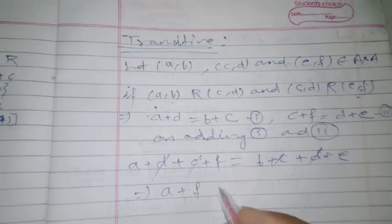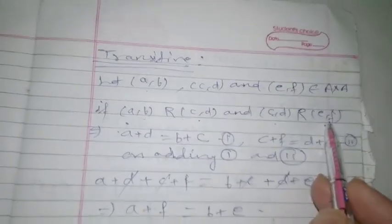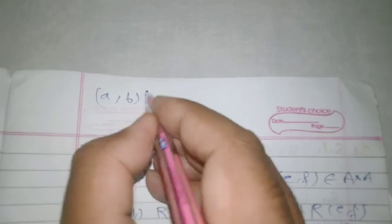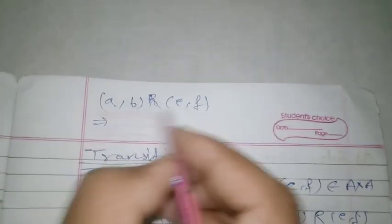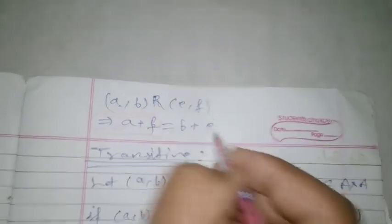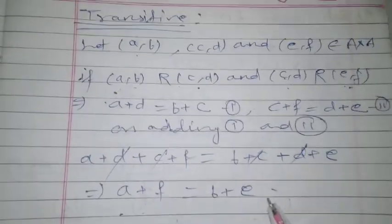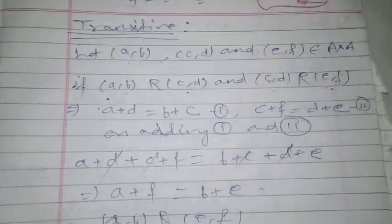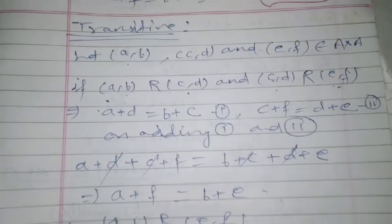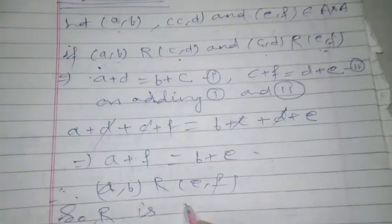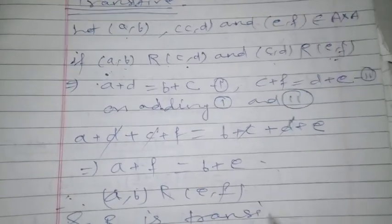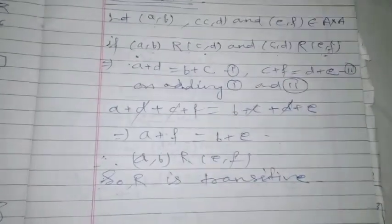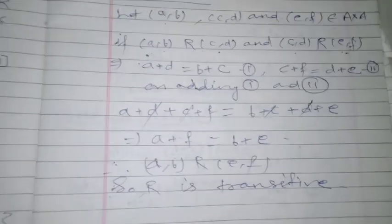After cancellation we get a+f = b+e. Checking: if (a,b) R (e,f), we need a+f = b+e — and that is exactly what we obtained. Therefore (a,b) R (e,f), so R is transitive. Since the relation is reflexive, symmetric, and transitive, R is an equivalence relation.